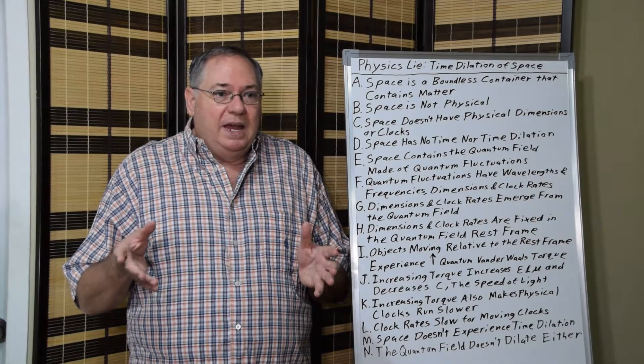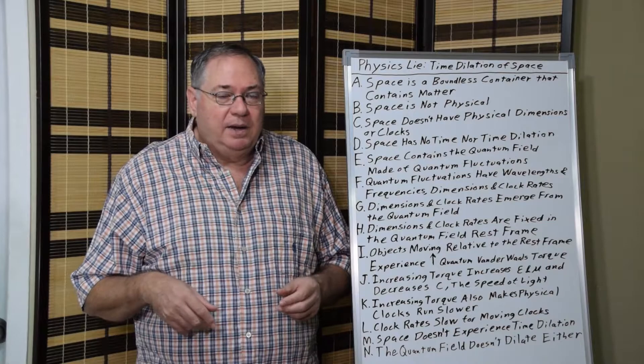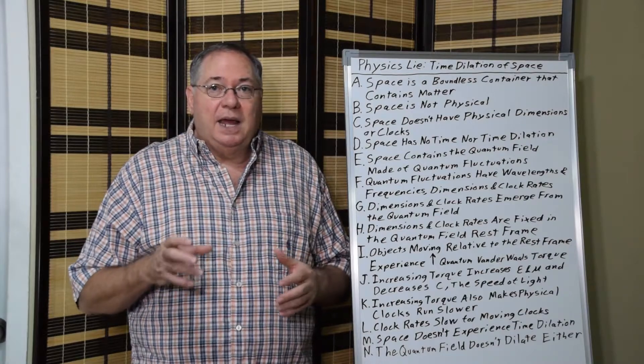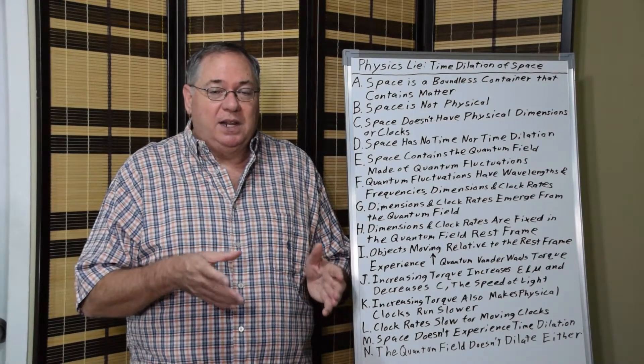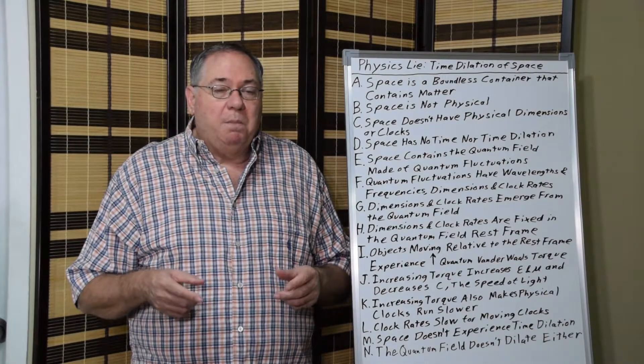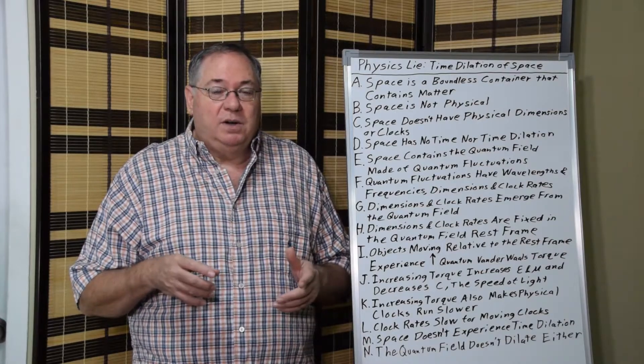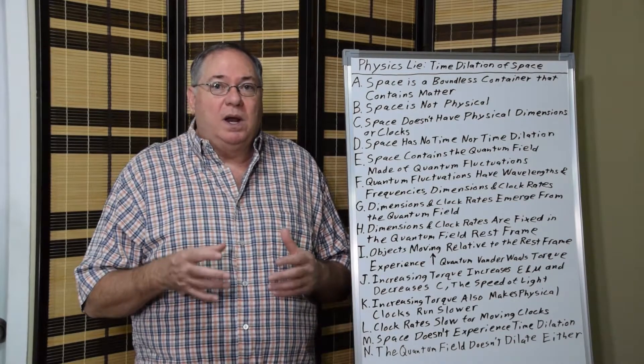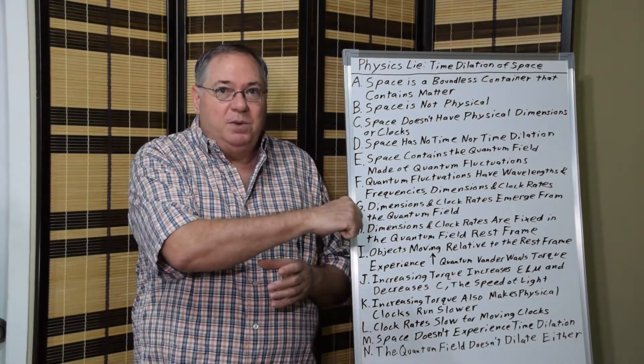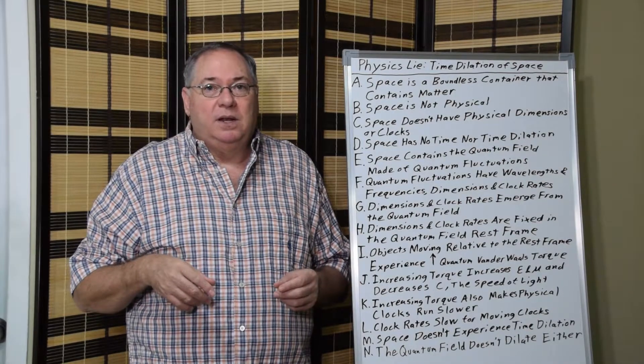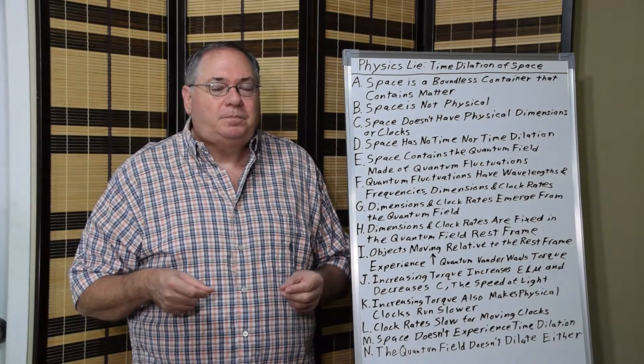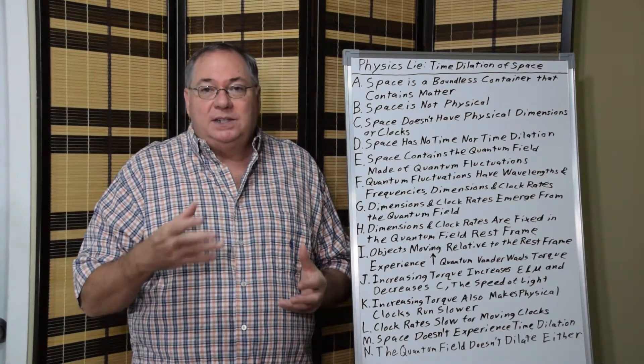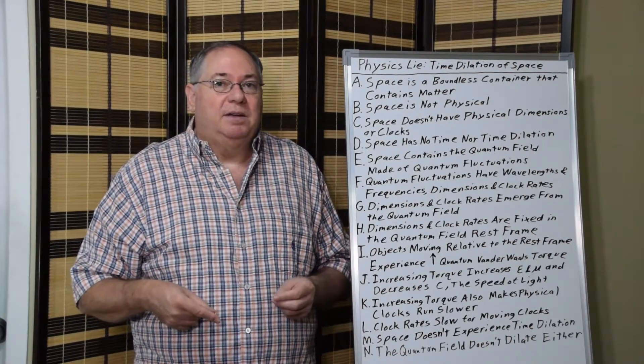Because of this, we have a different form of relativity theory. When we consider an object or observer moving through space, that observer doesn't change the dimensions and clock rates in the rest frame. But what happens is the object or moving observer experiences an effective increase in torque. The quantum torque appears larger because they're having to move against the sea of rotating dipoles or dipoles that don't want to rotate. The more you go, the higher the resistance.